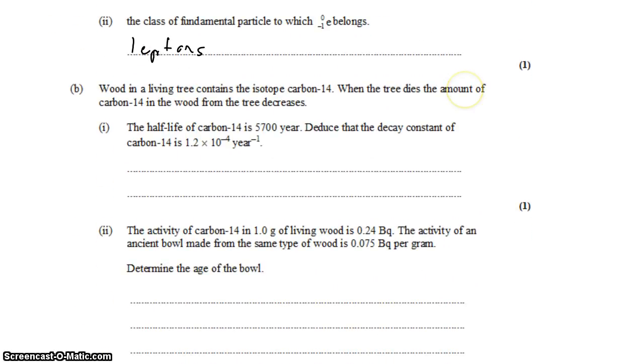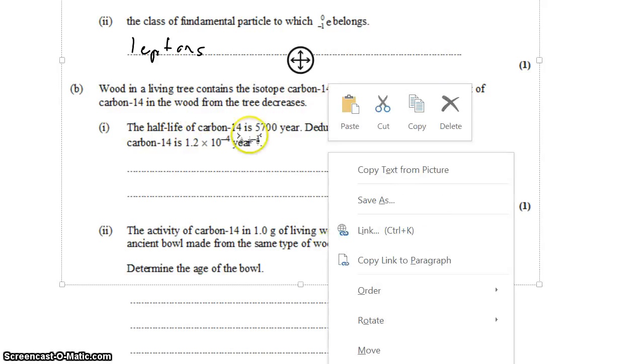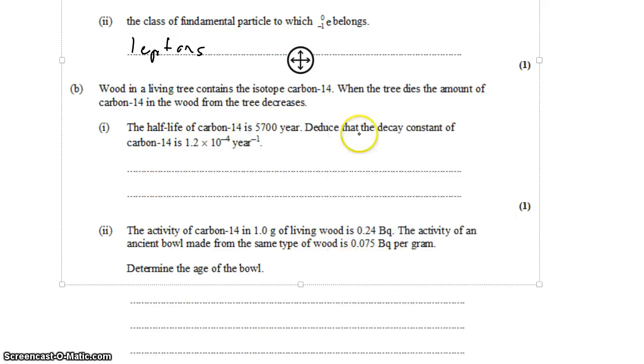Part B says that wood in a living tree contains the isotope carbon-14. All living matter does. When the tree dies, though, the amount of carbon-14 in the wood starts to decay away. The half-life of carbon-14 is 5,700 years. Deduce the decay constant of carbon-14.